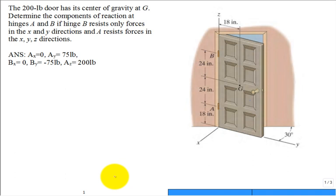You have a 200 pound door with its center of gravity at G. We'll find G right there. Thinking free body diagram, the weight of the door is going to be down with a magnitude of 200 pounds. We need to determine the components of the reaction at hinges A and B. Hinge B resists only forces in X and Y directions, and A resists forces in X, Y, and Z directions.